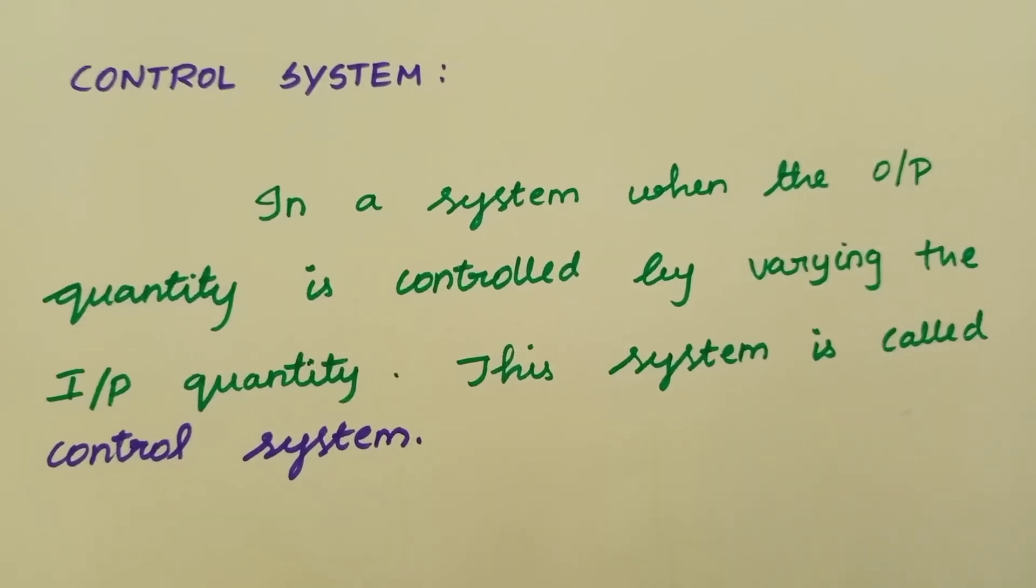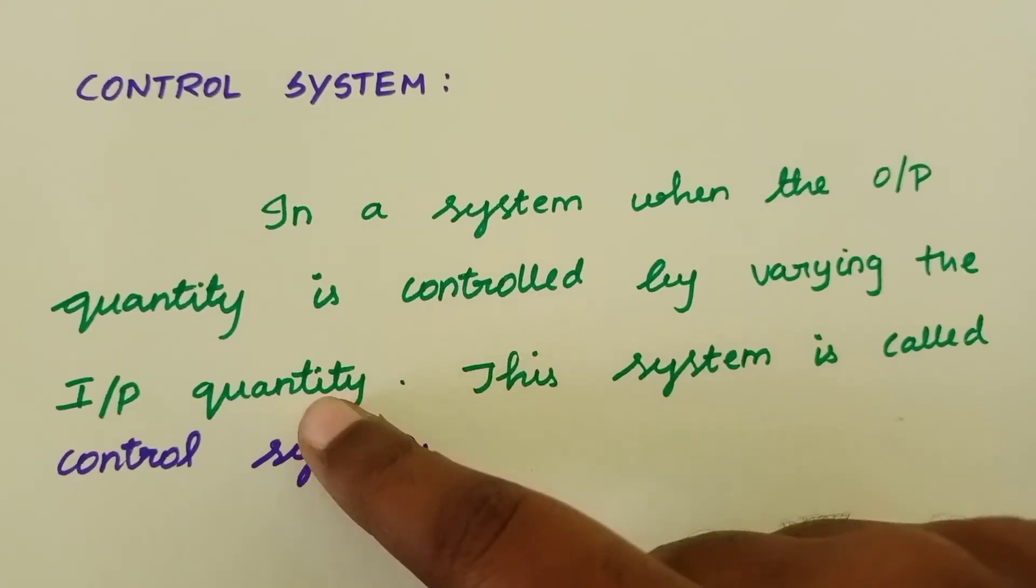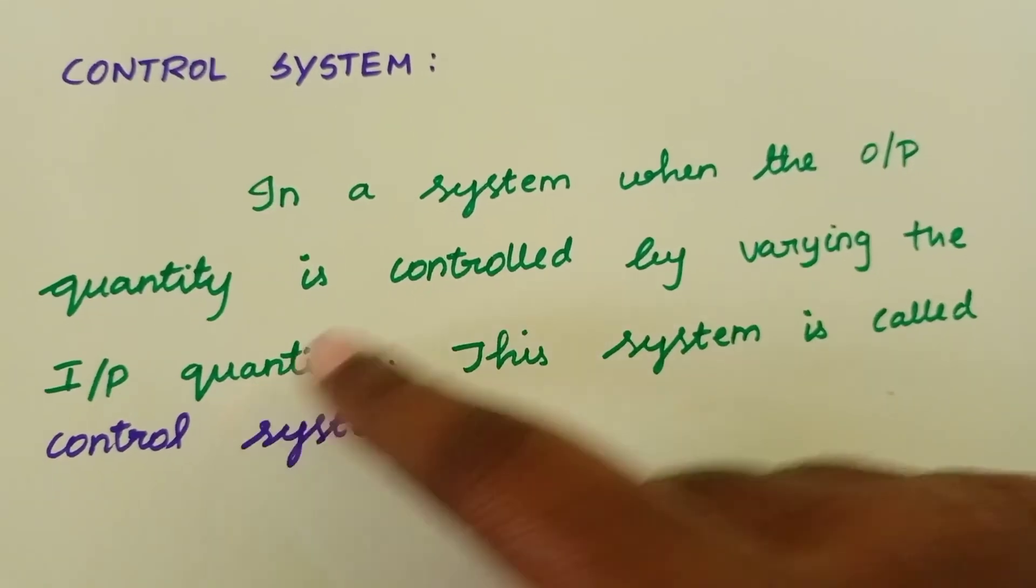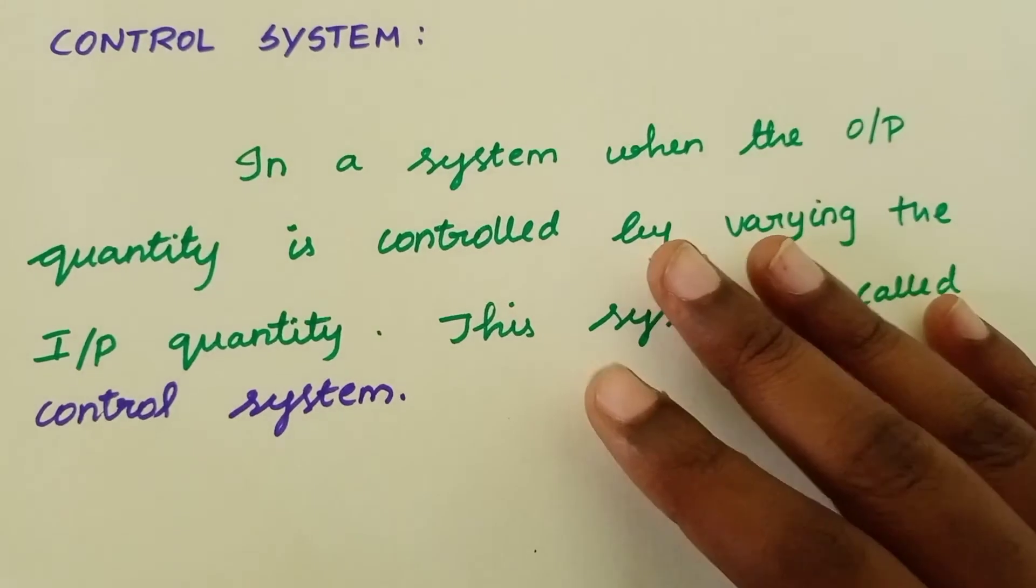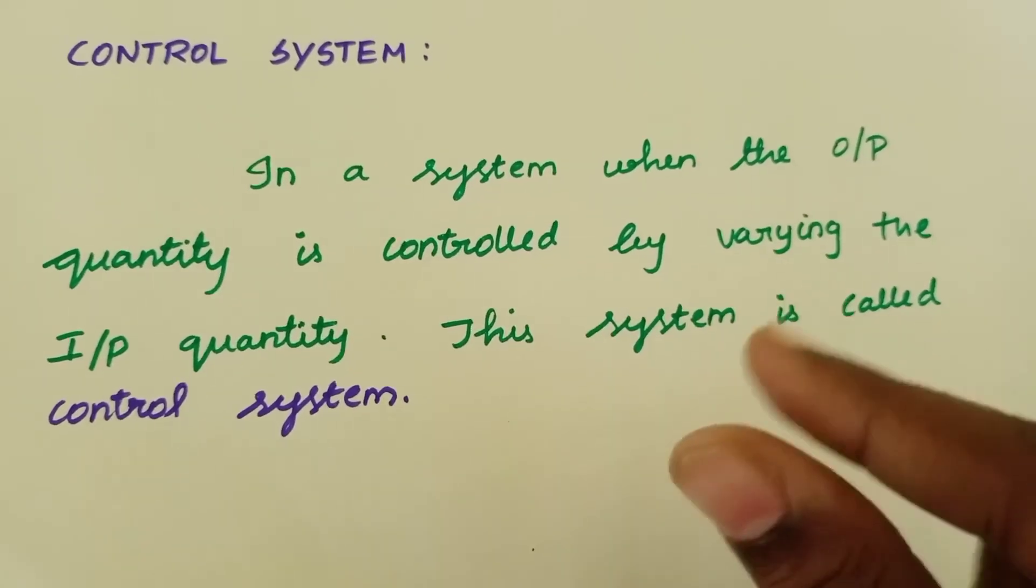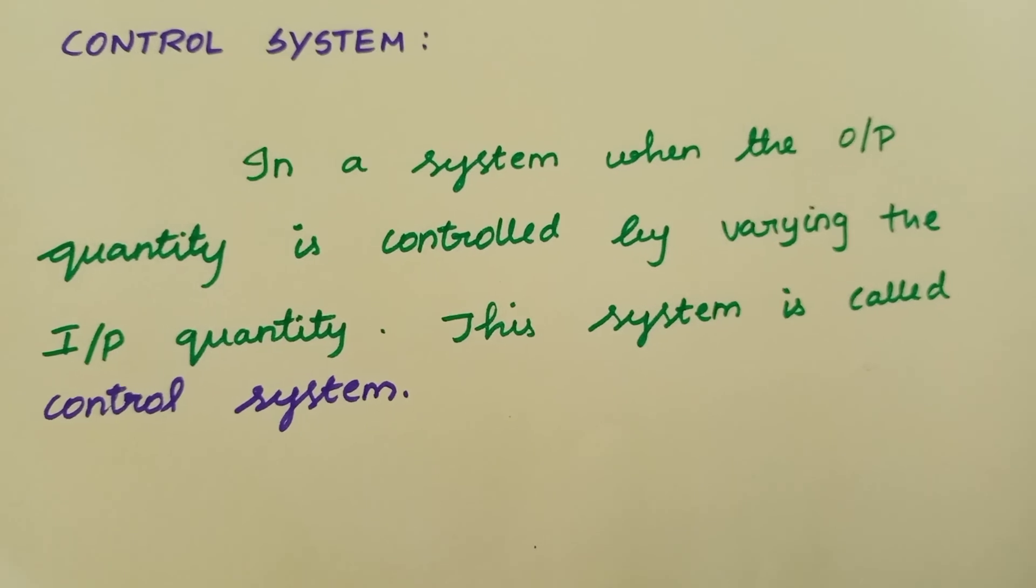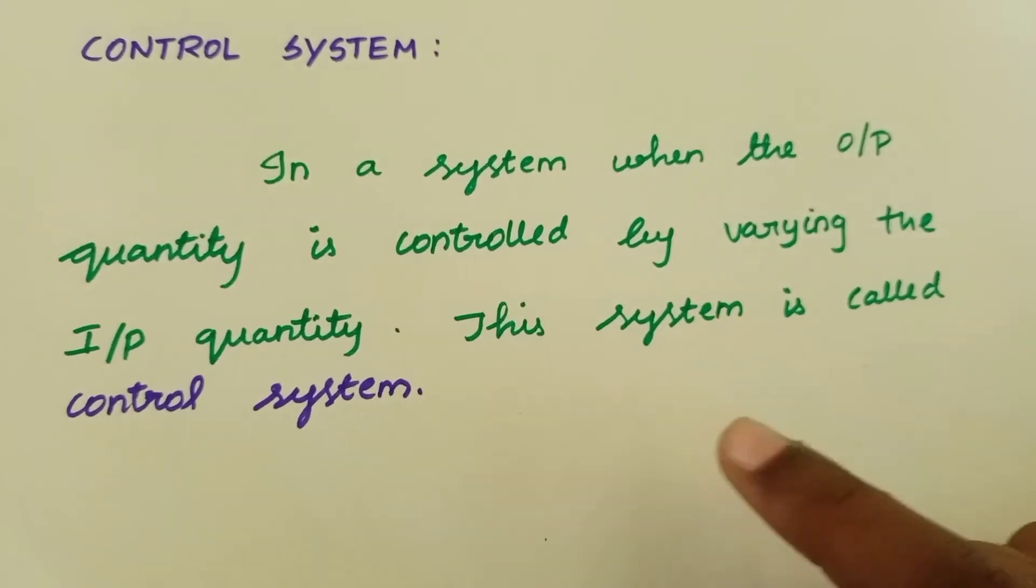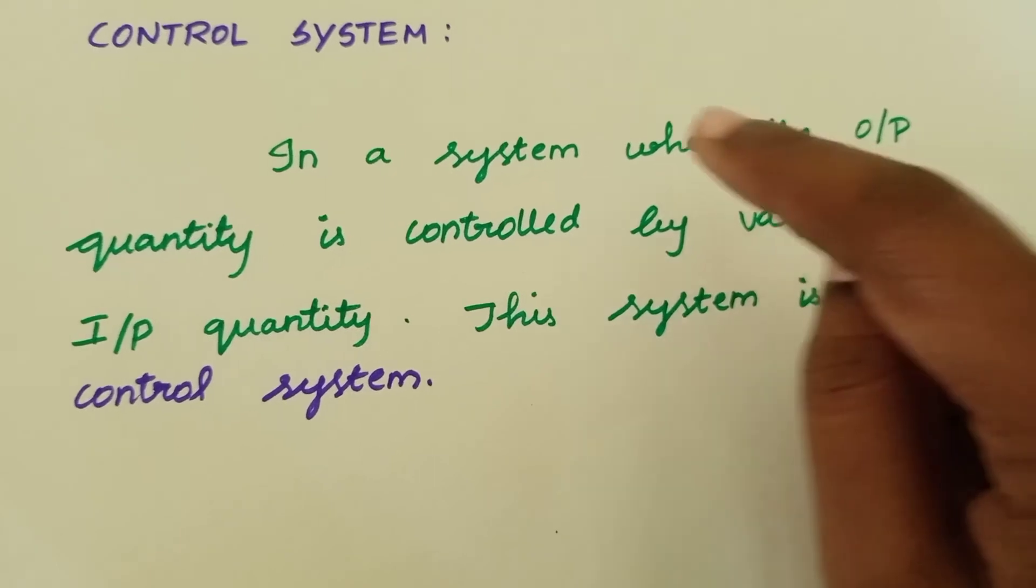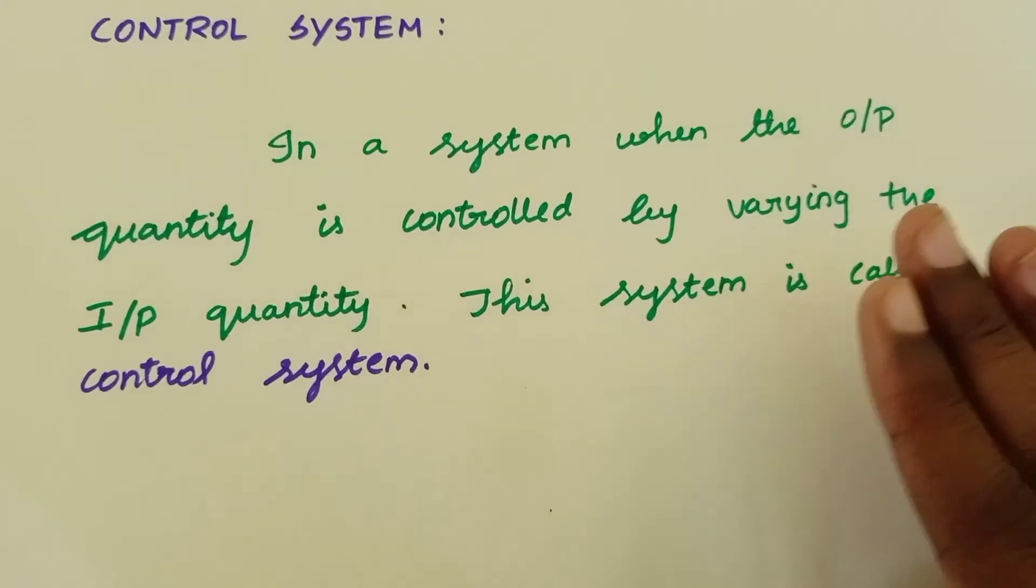If we use a current system, we change the input to control the output. For example, the fan regulator is a control system. When you turn the regulator, there are numbers: 5 is one resistance level, 4 is the same, 3, 2, 1, and 0 is full resistance. The fan speed is controlled by varying the resistance.